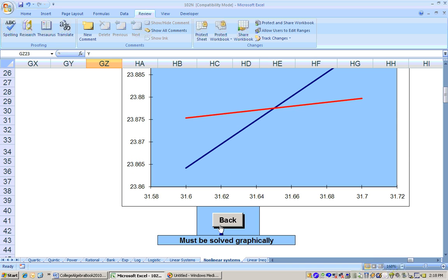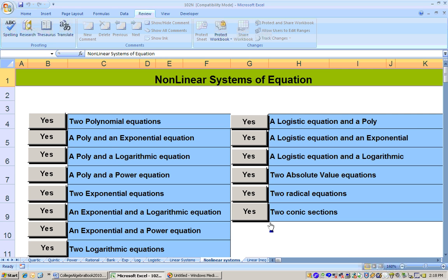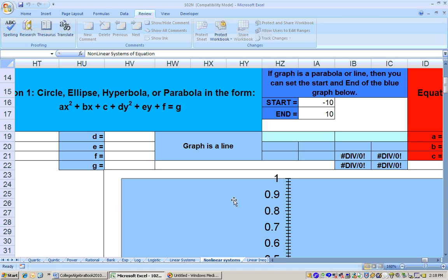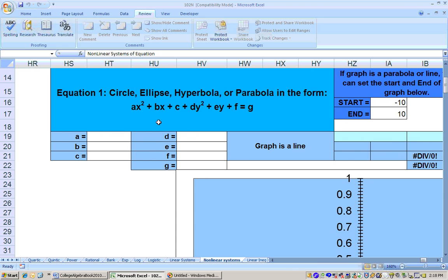So let me click the back button here so I can get back to my choices. And actually, even a parabola is considered a conic section. So this is going to be the last choice right here, conic sections. So now I need to put in my coefficients for the two conic sections.